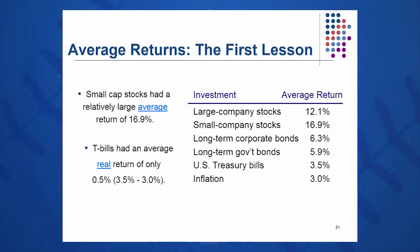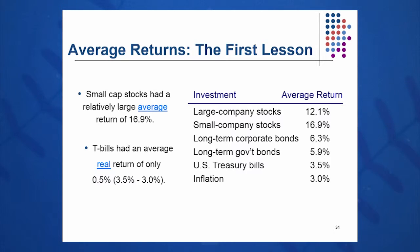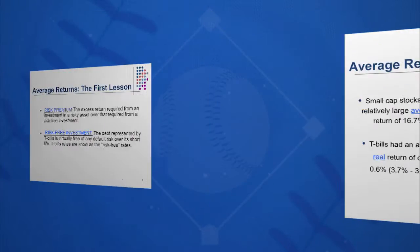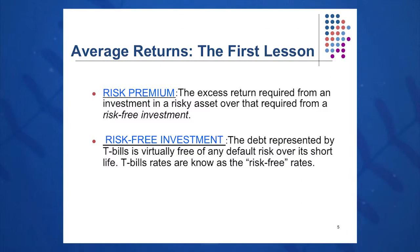T-bills have grown slowly and steadily at about 3.5% to 4% per year. And inflation over the last 85 to 90 years has averaged about 3%.